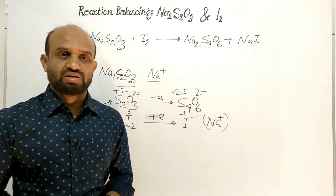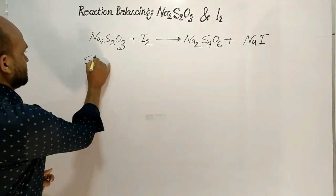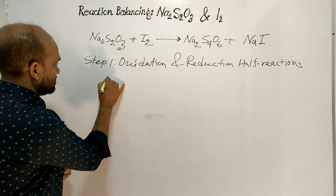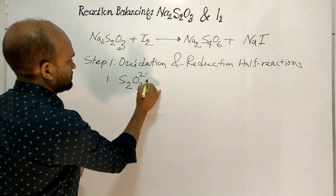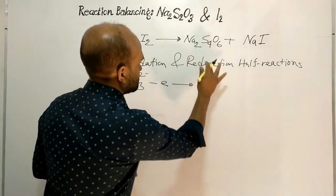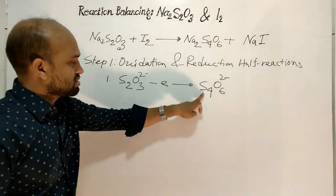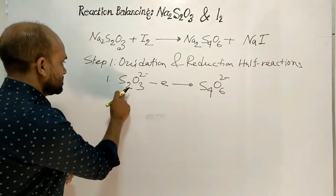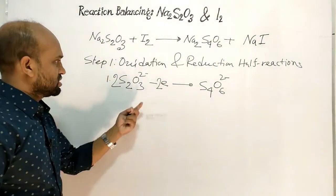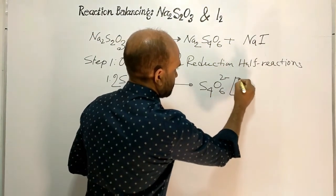Now let's balance the reaction step by step. Step 1: write the oxidation and reduction half reactions. In equation 1 (the oxidation half reaction), thiosulphate ion loses electrons and converts to tetrathionate ion. Since tetrathionate has 4 sulfur atoms and thiosulphate has 2, we multiply thiosulphate by 2. So 2 thiosulphate ions donate 2 electrons.